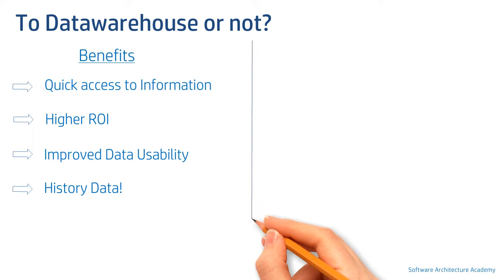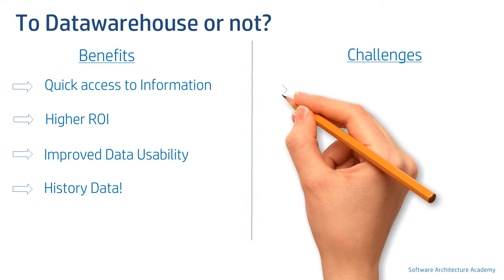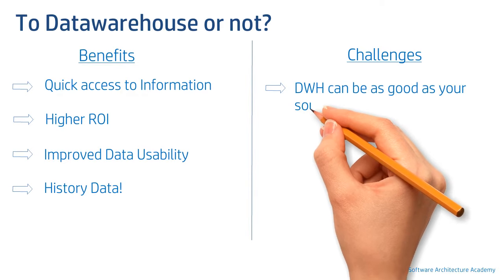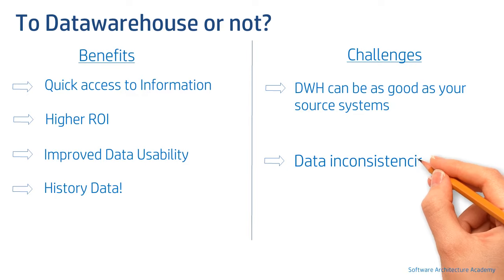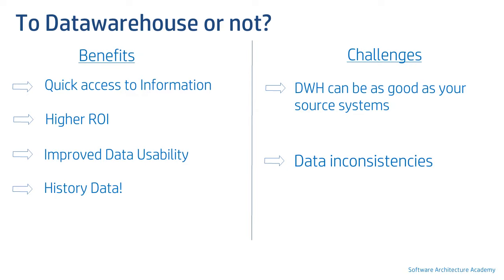And now the challenges. Data within a data warehouse can only be as good as its sources, because a data warehouse doesn't capture or update any data for customers — so if the quality of data is bad in its source, the same will reflect in the data warehouse. Another challenge is that data loaded from multiple diverse sources can have similar kinds of data, which often leads to data inconsistencies.